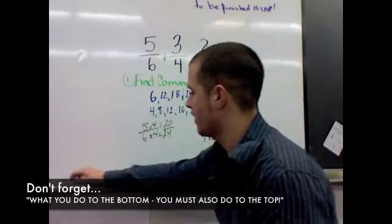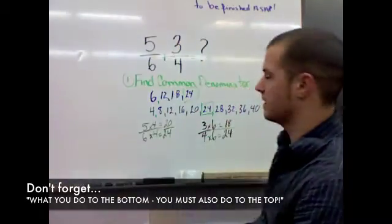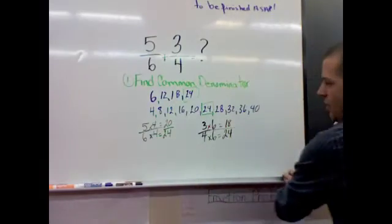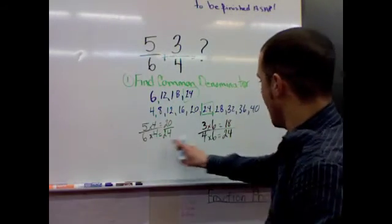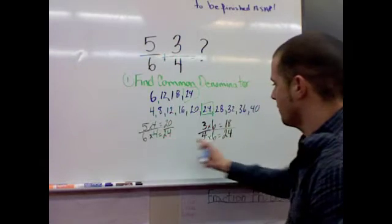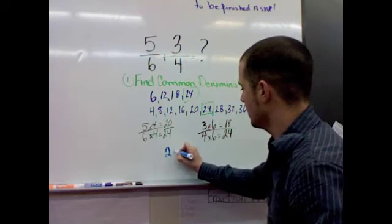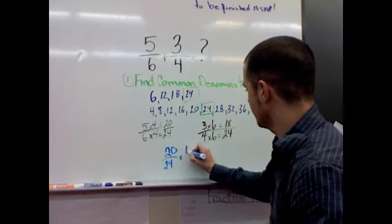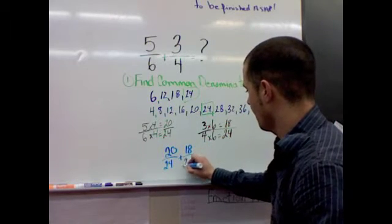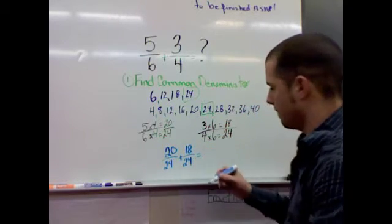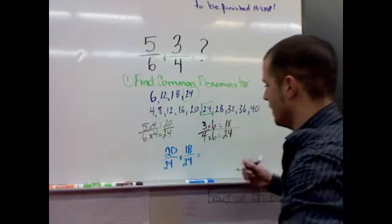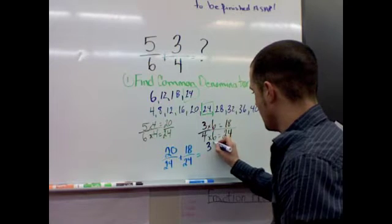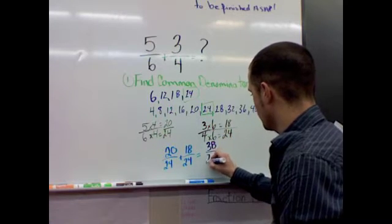Okay, now we've got to add these two fractions together. This is where it gets interesting, because we're going to have an improper fraction here. Watch this. You have to add these two equivalent fractions together. So 20 over 24 plus 18 over 24. Okay, what you're going to end up with is 38 over 24.